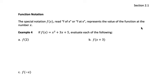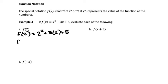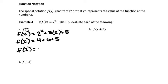In example four, if f(x) equals x squared plus 3x plus 5, we evaluate each of the following. For part A, f(2) means we're plugging in 2 for x, replacing every x with 2. So we have 2 squared plus 3 times 2 plus 5. Using order of operations — exponents first, then multiplying, then adding — that's 4 plus 6 plus 5, which equals 15. So f(2) equals 15.